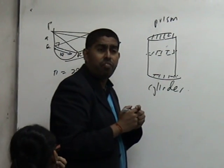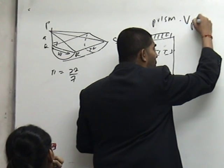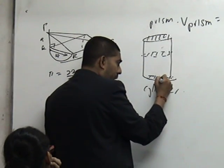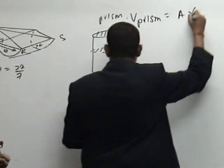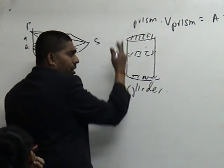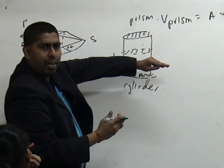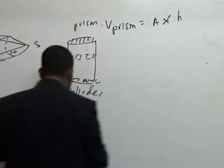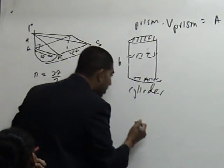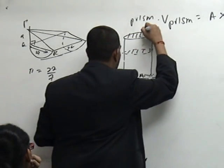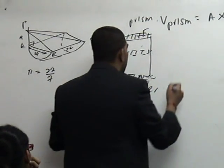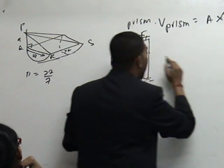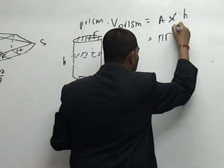So, a cylinder is basically a prism because it has the same cross-section area. So, what is the general formula for the volume of a prism? Cross-section area, I call it A, times by the height. If it is standing, if it is slipping horizontally, then it will be the length. So, A times H.